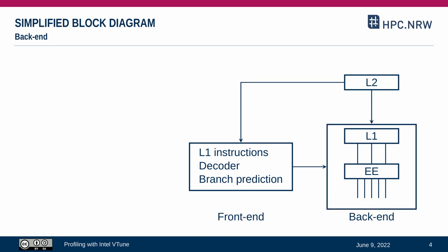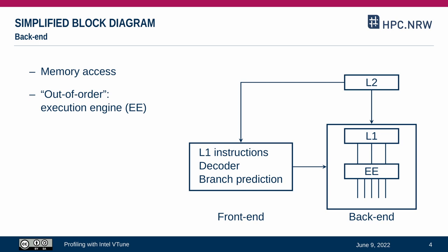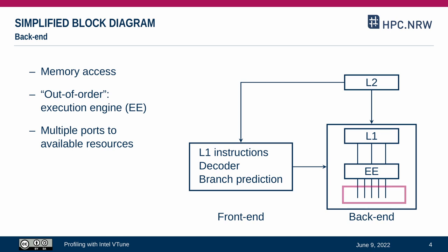The back end picks up micro operations and maps all operations to available resources. It is executing operations on data stored in the level 1 cache. The code execution is performed by the execution engine and it can work out of order to optimize the utilization of available resources. Data is loaded and coprocessors, for example for vectorized operations, are accessed via ports. Keep in mind that these low-level resources are commonly underutilized by software, so understanding how much a given application is utilizing these resources can play an important role during optimization.